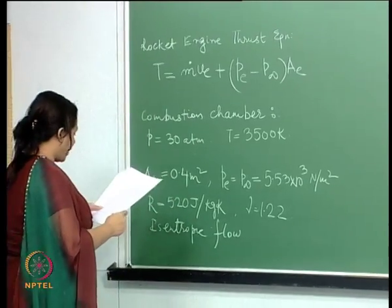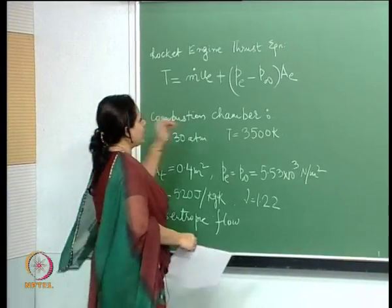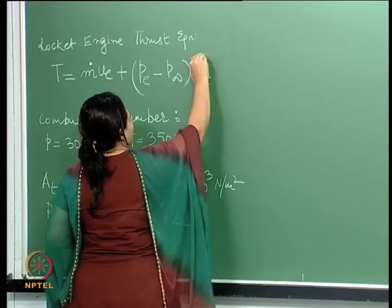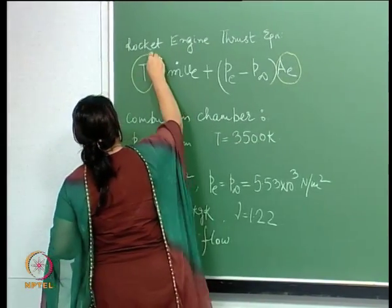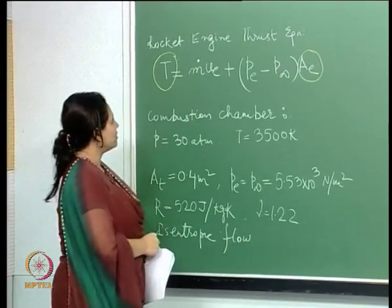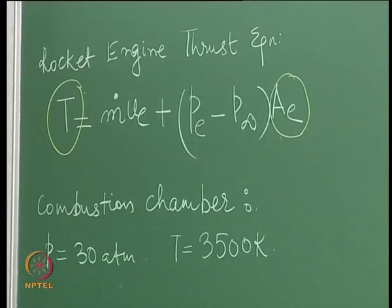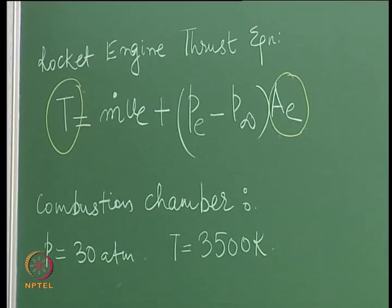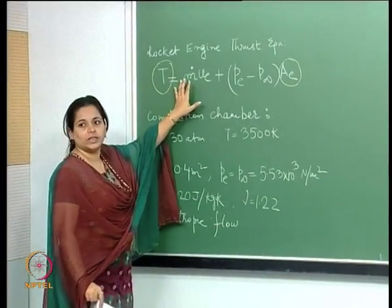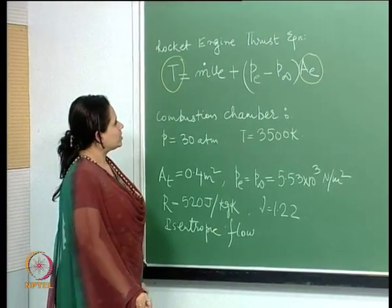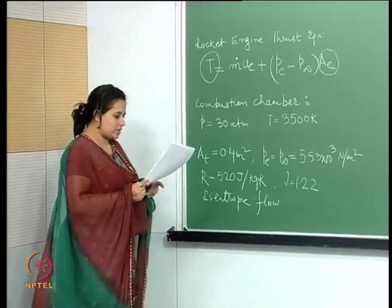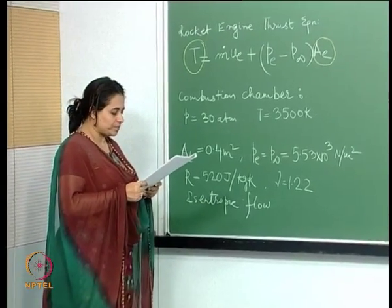What we need to find out is the area at the exit and the total thrust — these are the two things we need to calculate. In order to do that, we need m-dot and u_e. Let us go ahead and proceed to calculate this. How will we go about this?